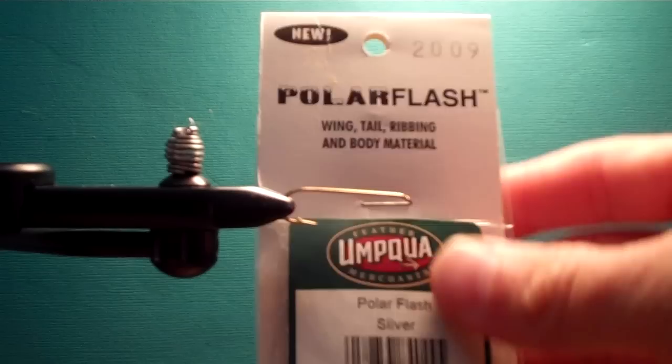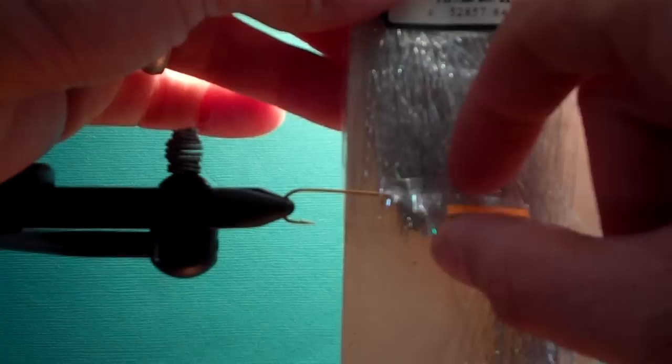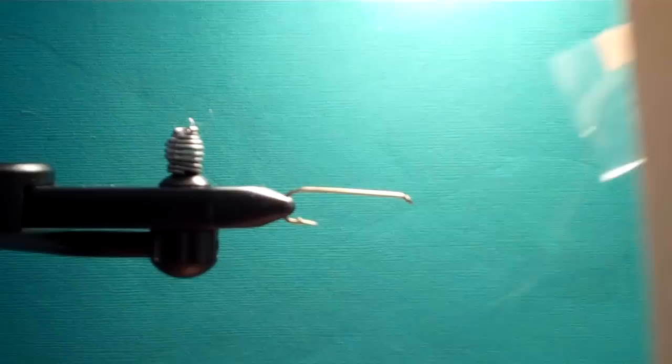The tail is just going to be polar flash. And what I do is I cut the plastic bag so I know exactly the amount sticking out is the exact length I need. It kind of makes my tying more efficient.